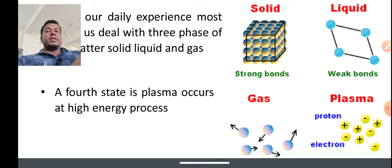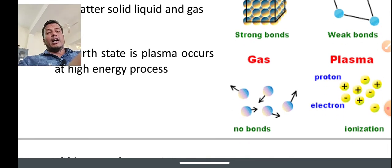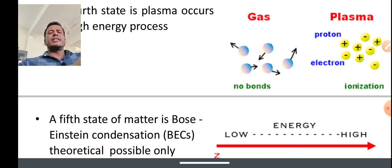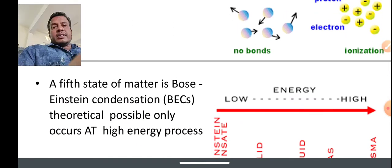If you heat any element, solid converts to liquid, liquid converts to gas, and further as you go on heating, it gets to the plasma state, that is the highest temperature state. So is there any fifth state of matter? Yes, it is theoretically possible, that is the Bose-Einstein condensations.